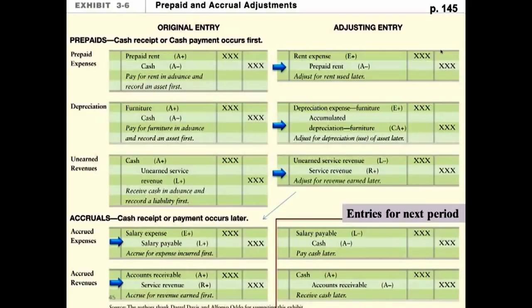Two entries shown here represent what happens later: when it reaches June 1st and employees are paid their bi-weekly salary by cash, that turns the liability into an actual cash payment. Similarly, once accounts receivable is recorded, it later turns into cash when clients pay. These entries involving cash are NOT adjusting entries — don't confuse them with the adjusting entries. This table is on page 145 of the book, so make sure you mark which ones are actually adjusting entries, because these two cash-related entries are not.